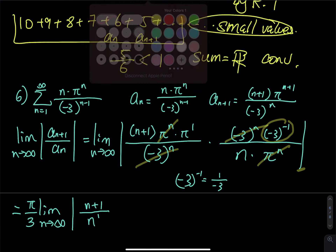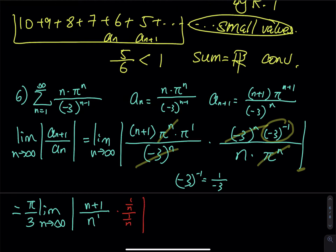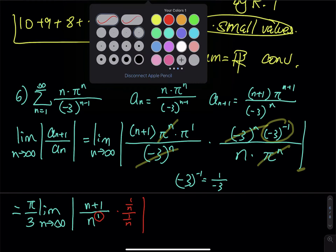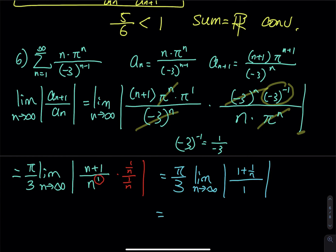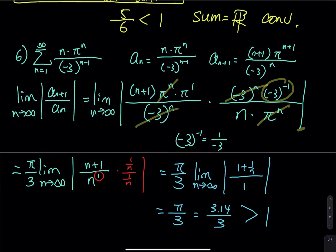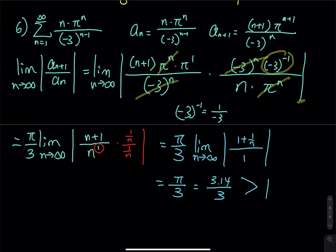Inside the absolute value we have n+1 divided by n. The highest power is 1, so divide each term by 1/n. As n approaches infinity, we get pi over 3. Since pi is about 3.14, pi divided by 3 is greater than 1. Greater than 1 means the series is in ascending order, so by the ratio test the series is divergent.